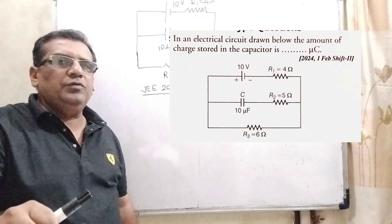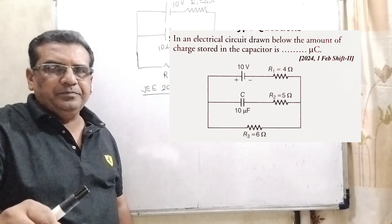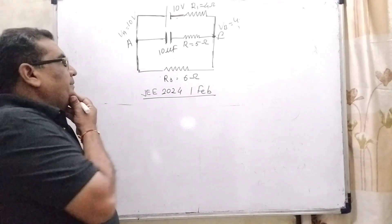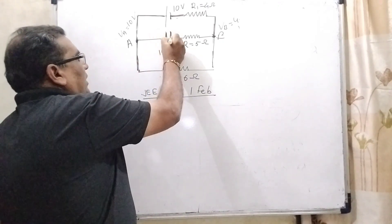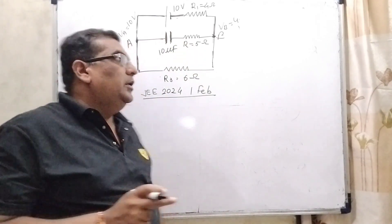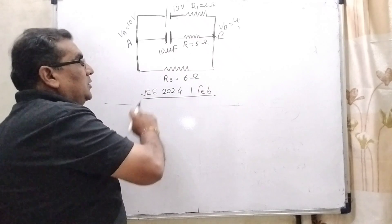And here last resistance is given 6 ohm. And this question is asked JEE Mains 2024, first step. Now, as we know that here, when capacitor is connected, then no amount of current will flow in that particular path.